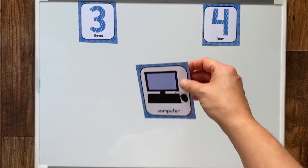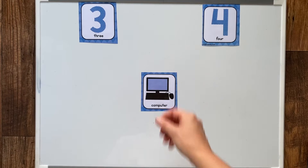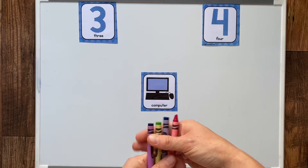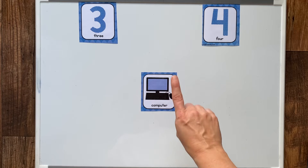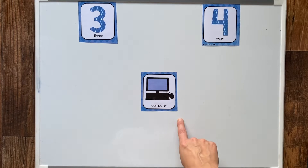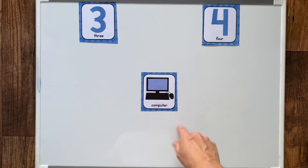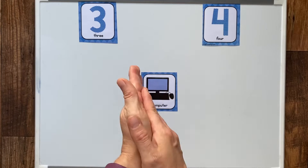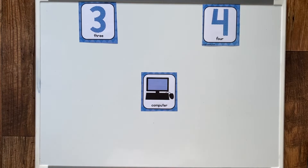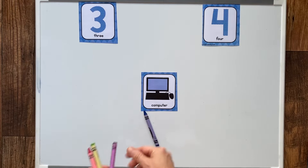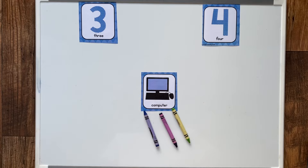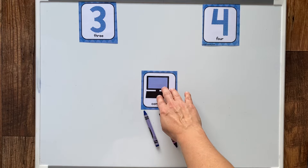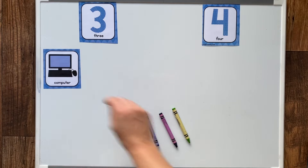So for example, let's do 'computer' and I'm going to keep track with my crayons here. Let's say computer — tap it. Com-pu-ter. You could even clap it. Com-pu-ter. Now I'm going to lay down my crayons for each one of those sounds. Com-pu-ter. Three crayons. Computer has three syllables.